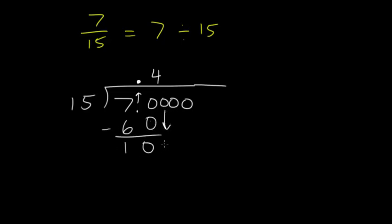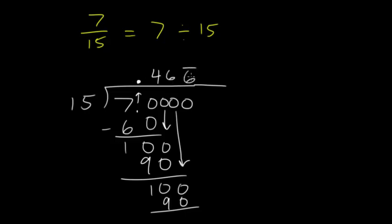Now 15 goes into 70 four whole times, since 4 times 15 is 60. And when you subtract, you get 10. Then you can bring down a 0. So 15 goes into 100, looks like 6 times, since 6 times 15 is 90. And you're going to get a remainder of 10. And then bringing down a 0 again, it looks like it's going to repeat, because 15 goes into 100 again 6 times. 6 times 15 would be 90 again. And it just goes on forever. So you get 0.46 repeating. So the 6s repeat. So we can write this in. 0.466. Those repeat. So we've changed it to a decimal.